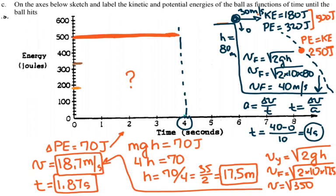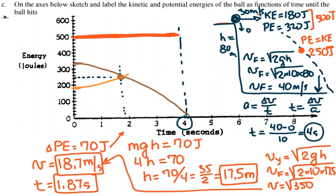So at approximately 1.87 seconds — almost 2 seconds — after the object starts falling, kinetic and potential energy are equal at 250 joules each. On the graph, the potential energy curve comes down through this crossover point and the kinetic energy curve rises through it, meeting at 250 joules. The potential energy decreases and the kinetic energy increases until the object hits the ground at 4 seconds.